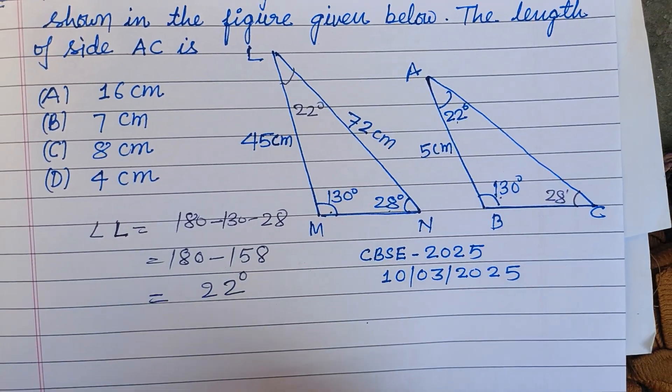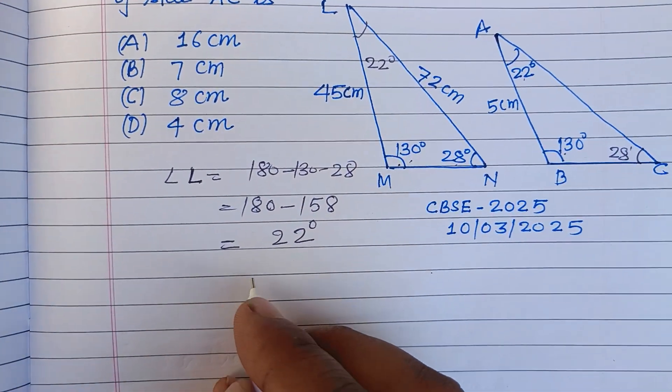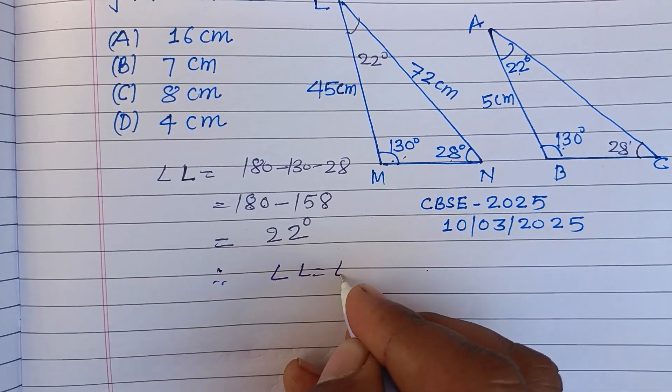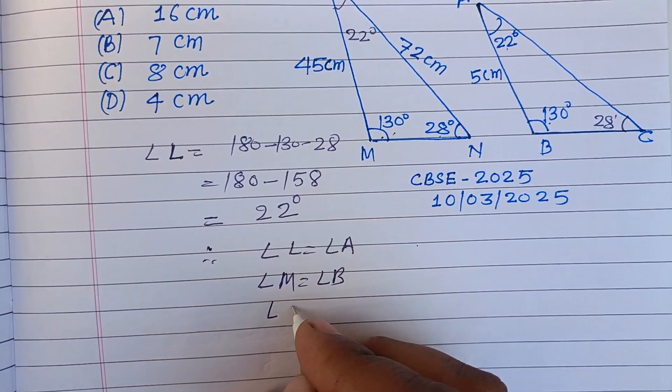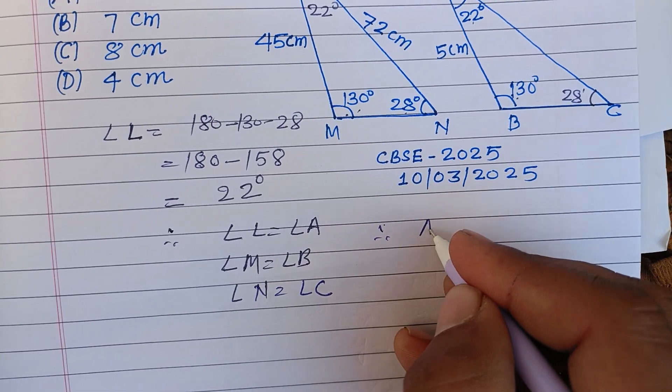So we have 22 degrees, 130 degrees, 28 degrees. Since angle L equals angle A, angle M equals angle B, and angle N equals angle C, therefore by AAA (Angle-Angle-Angle), triangles LMN and ABC are similar.